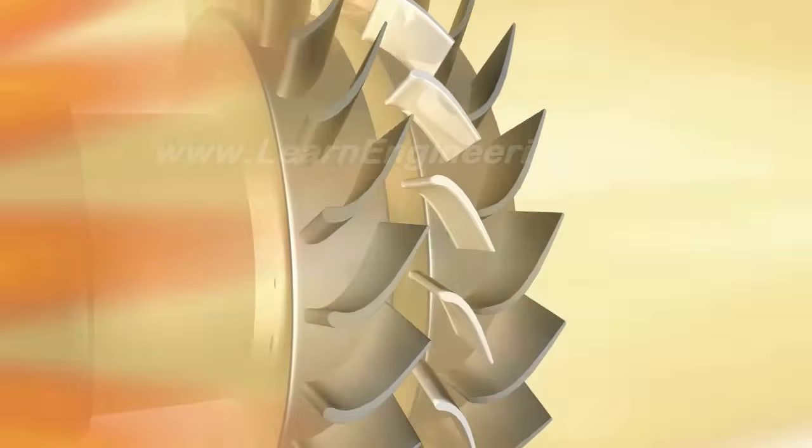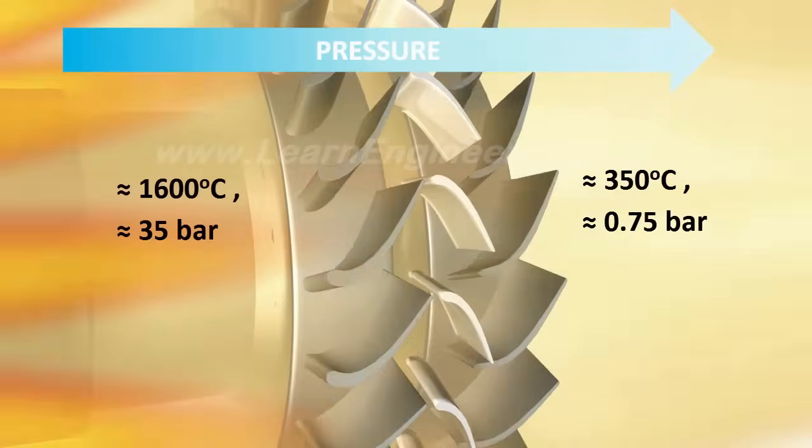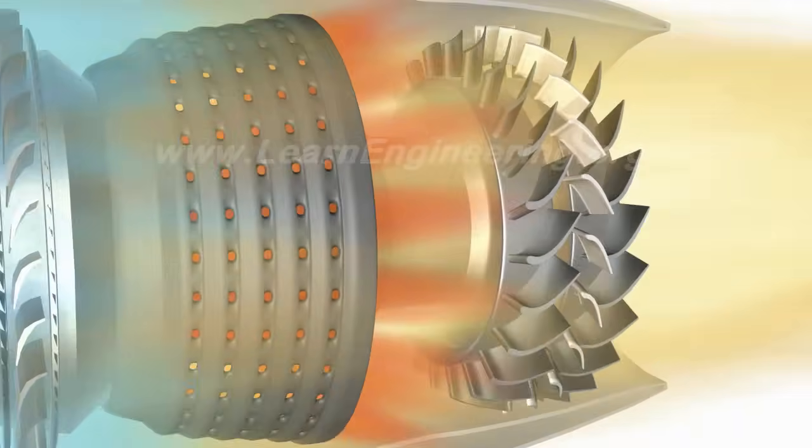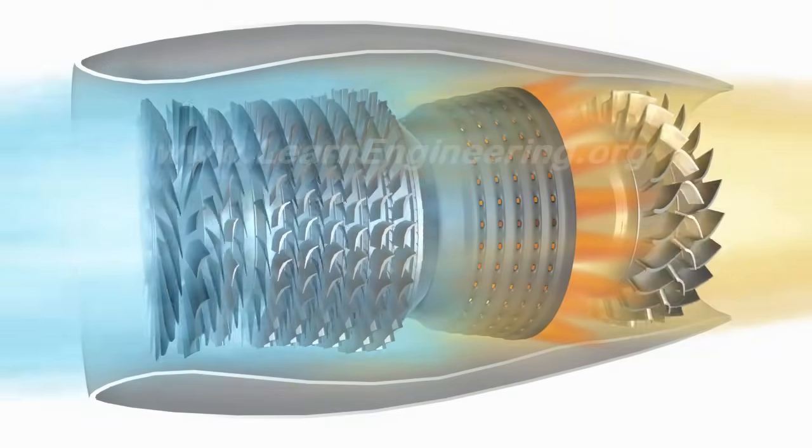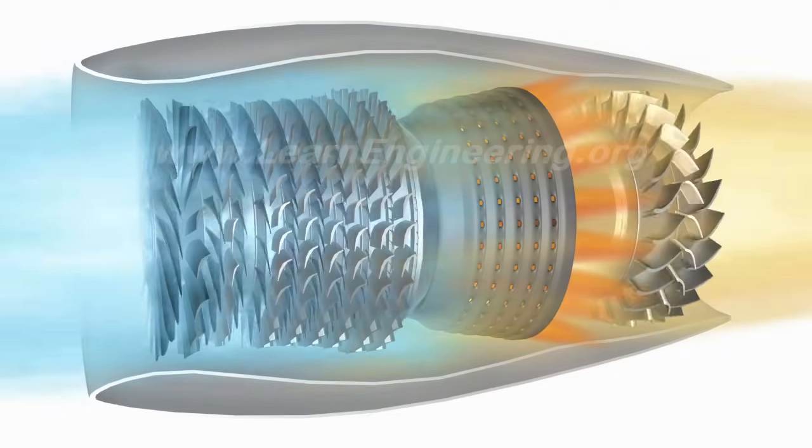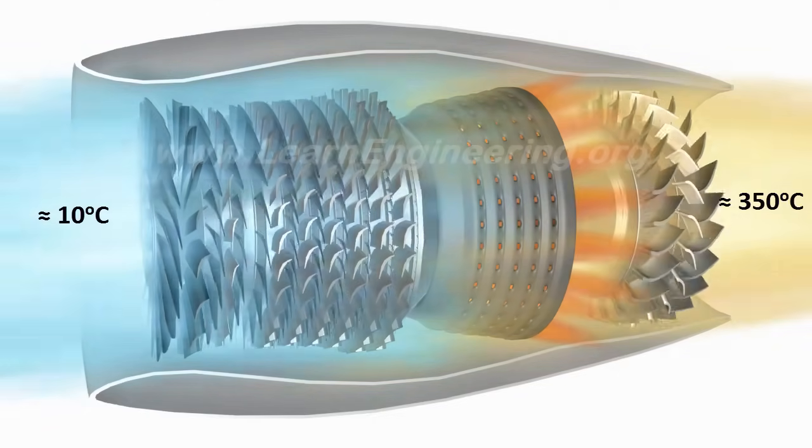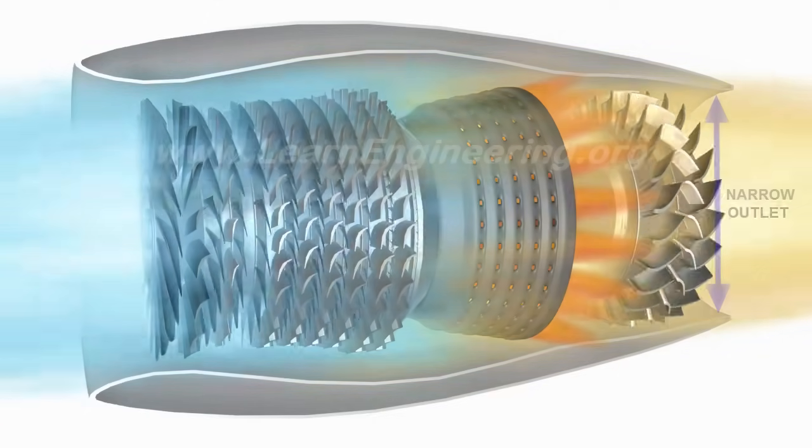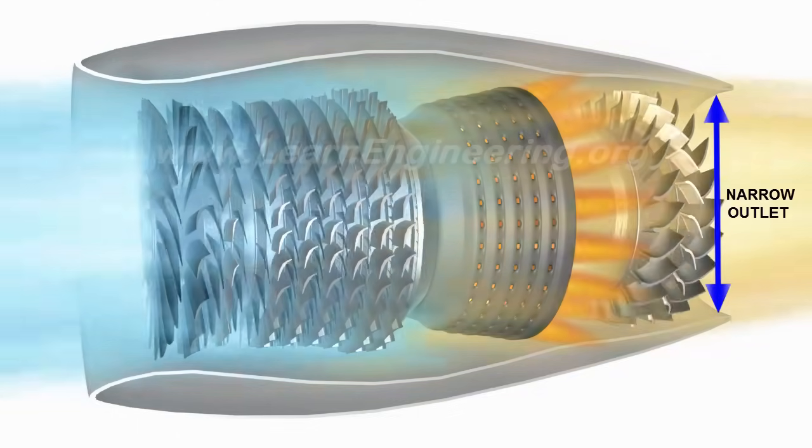As the turbine absorbs energy from the fluid, its pressure drops. Through these steps, we have achieved our objective: a really hot and high-speed air emitted from the exit of the engine. The engine case becomes narrower towards the outlet, which results in even greater jet velocity.